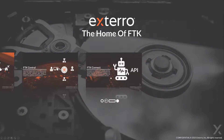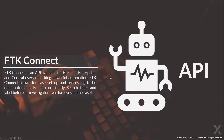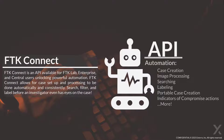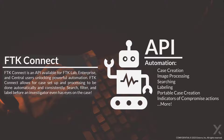Lastly, we have FTK Connect. FTK Connect isn't an interface necessarily, but is our API to allow you to unlock powerful automation with FTK Lab, FTK Enterprise, or FTK Central. Using the power of FTK Connect, you can automate the case creation process, image processing, searching, labeling. You can create a portable case based on those labels and search results, and you can run triggers based on indicators of compromise and much more.